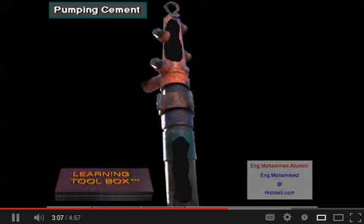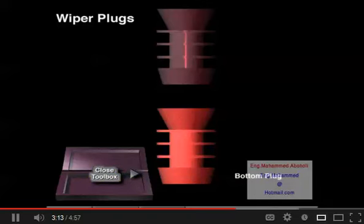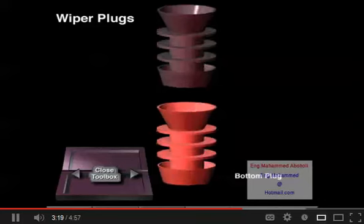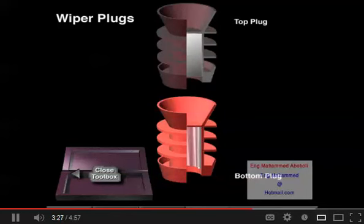Often the wiper plugs are identified by different colors to avoid confusion. The bottom plug is usually red or orange. It has a diaphragm that breaks when the plug gets to the bottom of the casing string, so the cement can pass through the plug. The top plug is usually black.